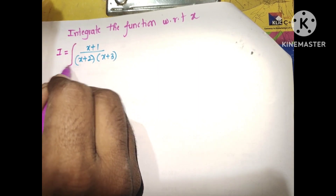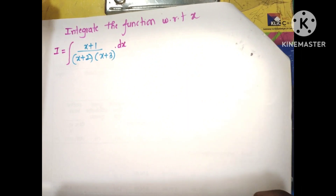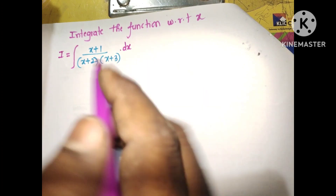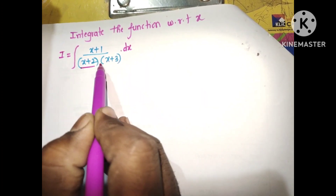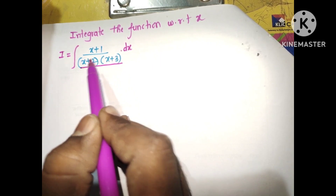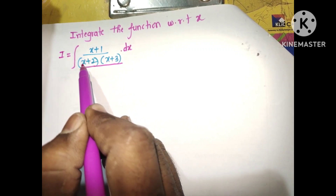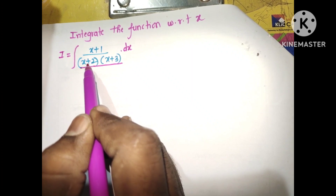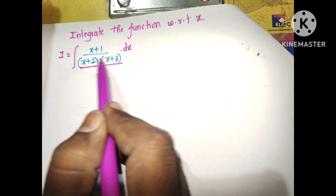Write I is equal to the integral of the given function with respect to x. Observe the denominator — it has non-repeated linear factors. Here x plus 2 and x plus 3 are not repeated, so these are non-repeated linear factors.